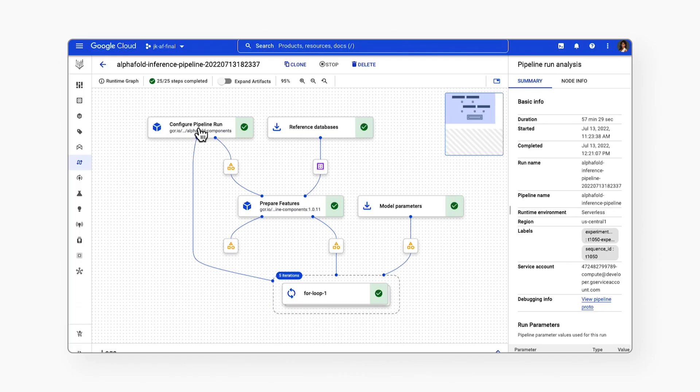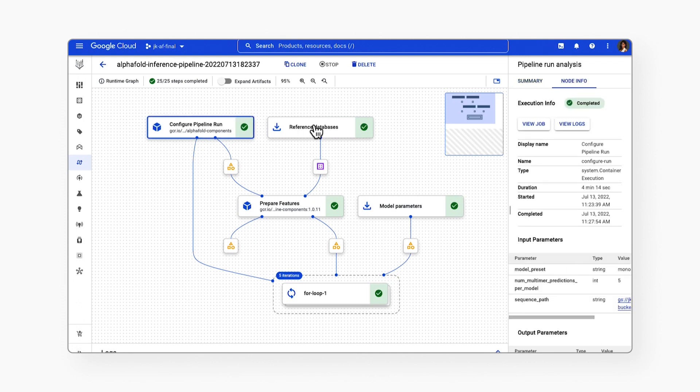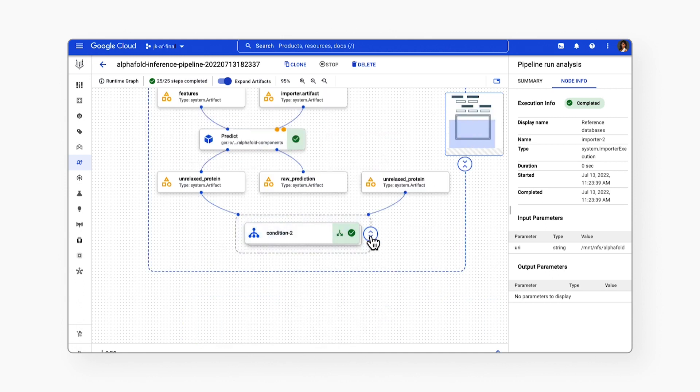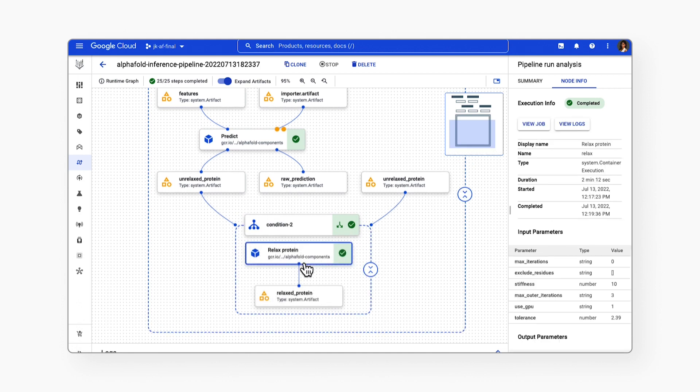The solution includes two example pipelines. The universal pipeline solution mirrors the exact logic in DeepMind's open source inference script but decoupled into discrete tasks so you can run the same experiments faster, more efficiently, and with better tracking.